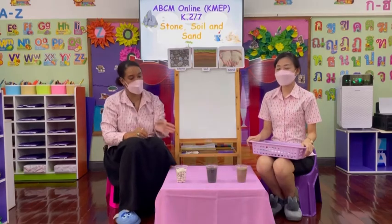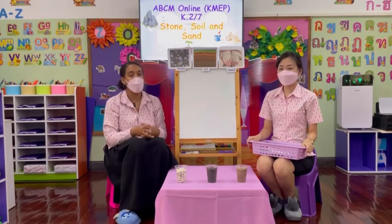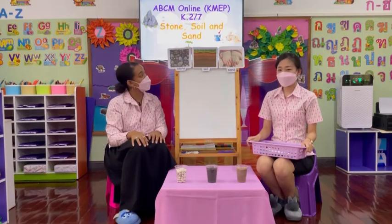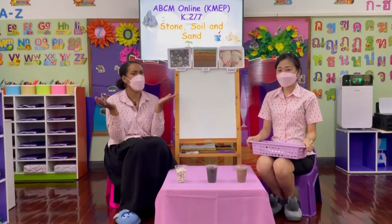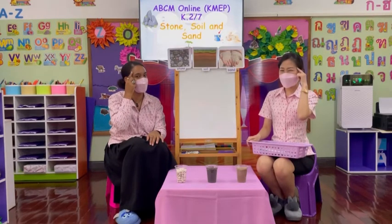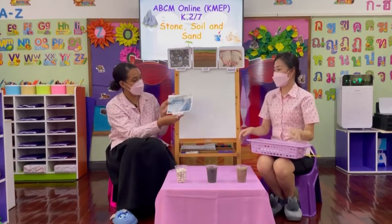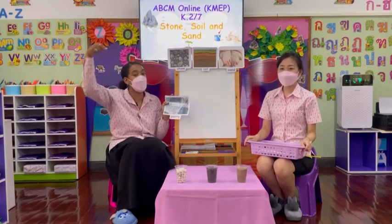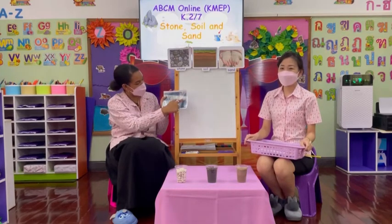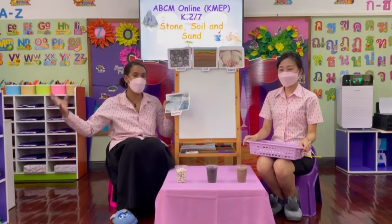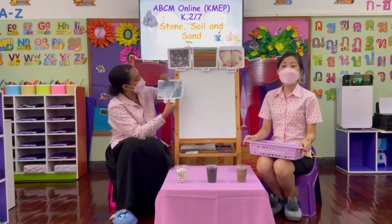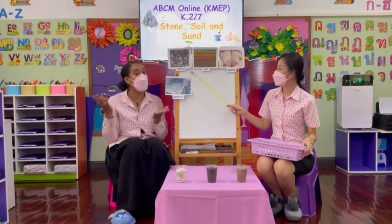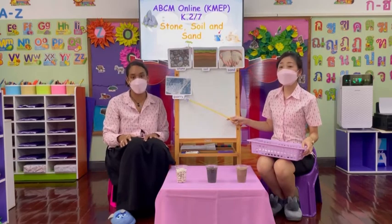Now we are going to see where we can find stones, soil and sand. Starting with stone — where do you think we can find stone? Here we have a quarry. A quarry is when we dig right down into the earth and get lots and lots of stone. Quarries are very, very big and it's where we can gather all our stone.